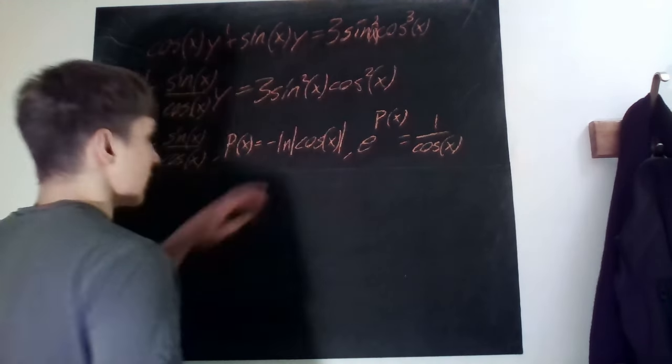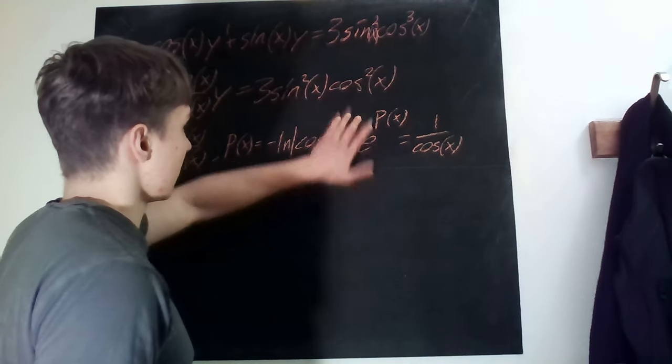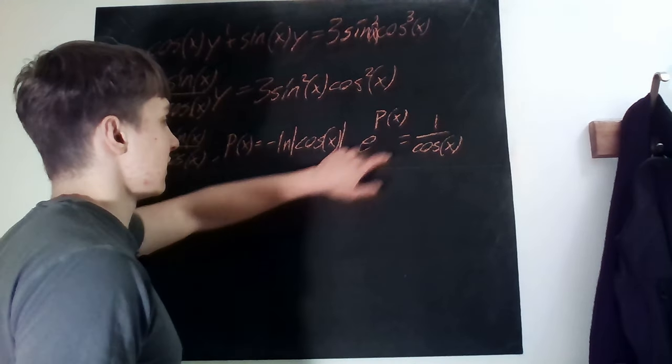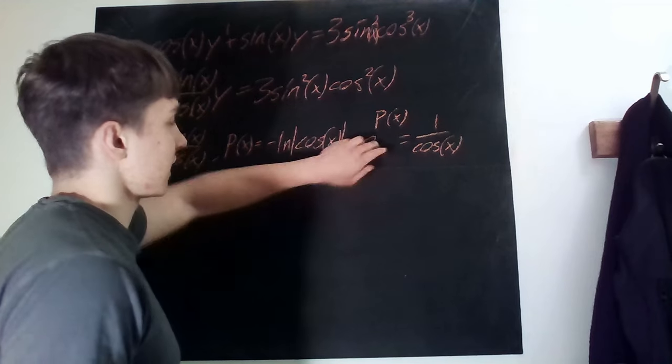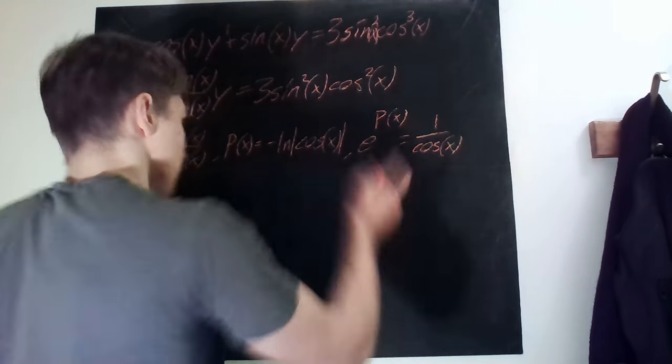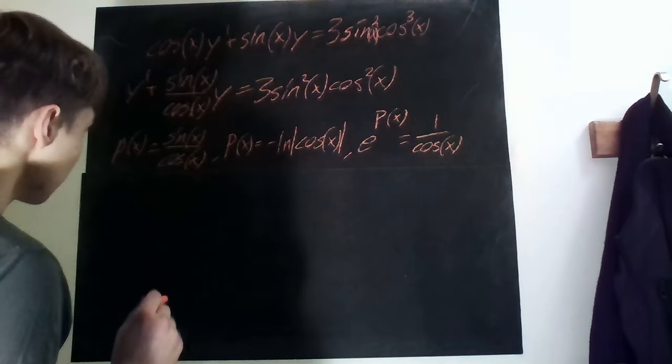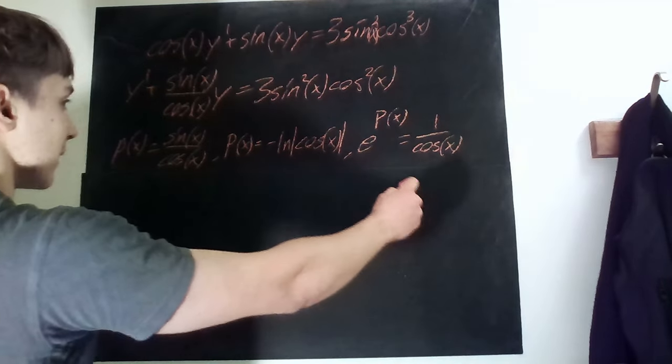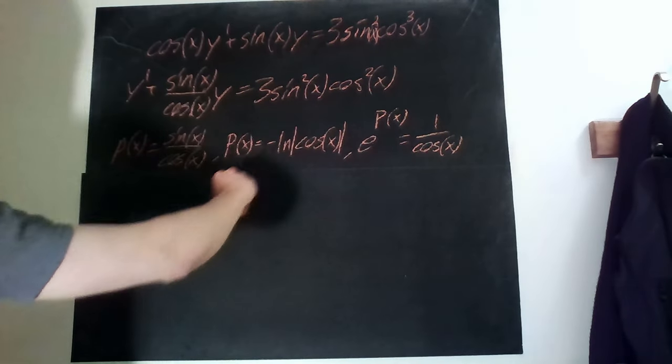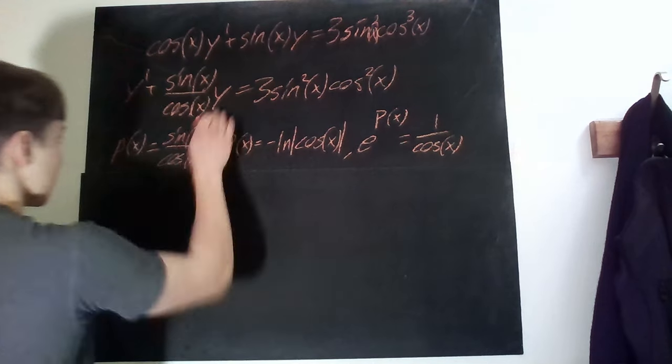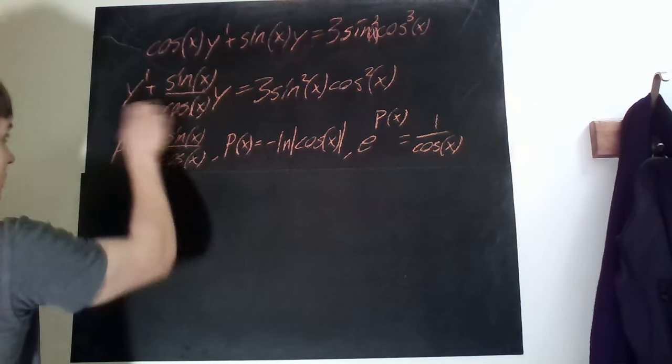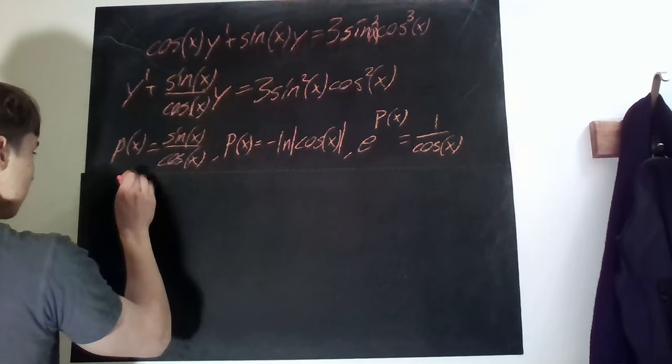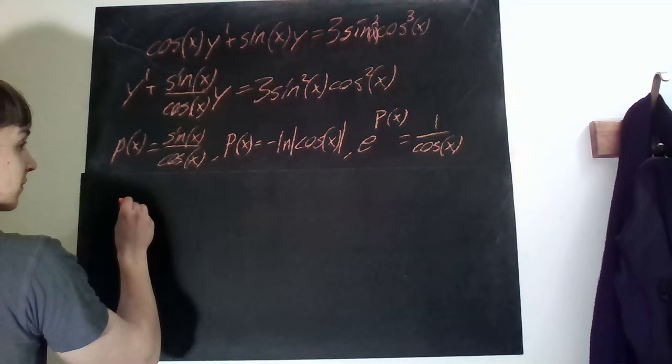Because you move the minus out and then you take e to the ln, so you just get cosine and then cosine to the power of minus one, so it's one over cosine. Therefore we multiply by the integrating factor everywhere and then we know that we can lump up these two terms using the product rule.